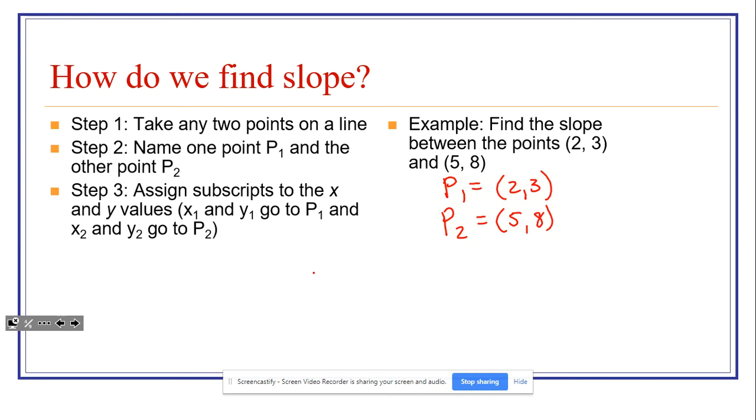Assign the subscripts to the X and Y values. X1 and Y1 go to P1, and X2 and Y2 go to P2. Now, it's simply just about going to the formula. Every time you're using this, you want to try and write the formula out, Y2 minus Y1 over X2 minus X1. And now it just becomes a situation of plugging the parts into the formula. So in this case, what we have is Y2 is 8, Y1 is 3, X2 is 5, and X1 is 2.